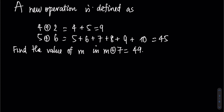We have 4 plus circle 2 equal to 4 plus 5 equal to 9, and 5 plus circle 6 equal to 5 plus until 10 equal to 45. The question asks us to find the value of m such that m plus circle 7 equal to 49.